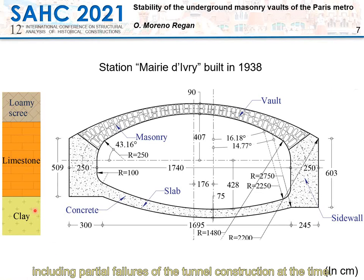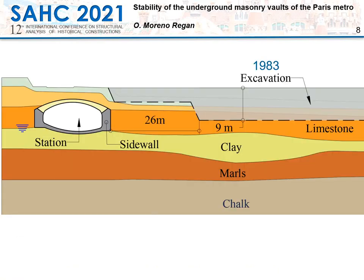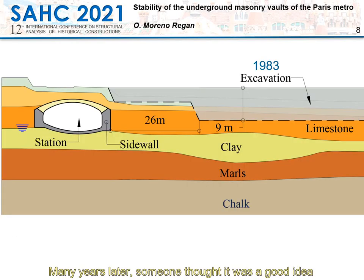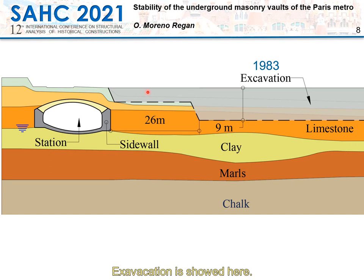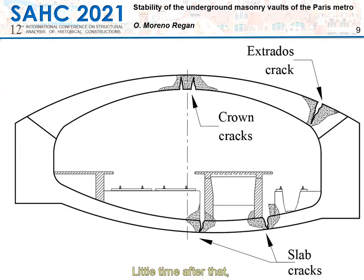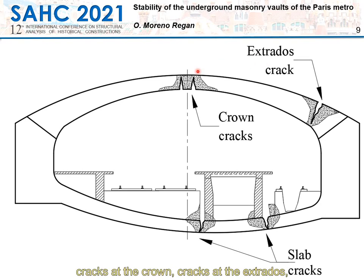The construction of the station was carried out in the late 1930s. According to historical records, the construction was very delicate and several problems were reported, caused by the swelling of the clay layer, including partial failures of the tunnel construction at the time. Many years later, someone thought it was a good idea to construct a group of buildings nearby — deep excavations for the parking lot and foundations were carried out in a short period of time in 1983.